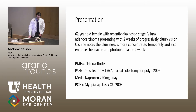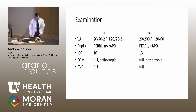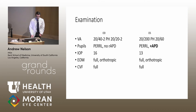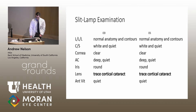We'll start out with a case. This is a 62-year-old female with a history of recently diagnosed stage 4 lung adenocarcinoma, presenting with two weeks of progressively blurry vision in the left eye. She notes that the blurriness is more concentrated temporally and also endorses headache and photophobia for two weeks. Her past medical history is relatively non-contributory. She has a history of myopia in both eyes, status post LASIK in 2003. On examination, visual acuity in the right eye is 20/40 minus 2, pinholing to 20/20 minus 2. In the left eye it is 20/200, pinholing to 20/60. She has an afferent pupillary defect in the left eye. Examination is otherwise unremarkable, with trace cortical cataracts in both eyes on slit lamp.